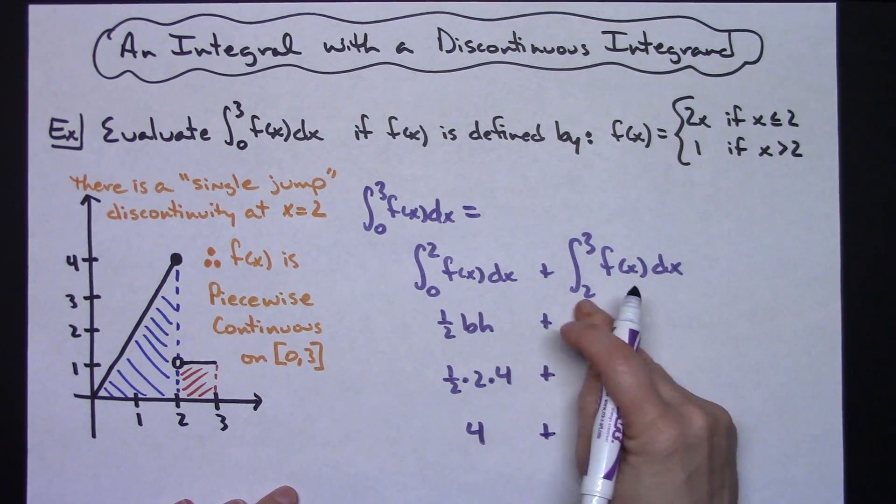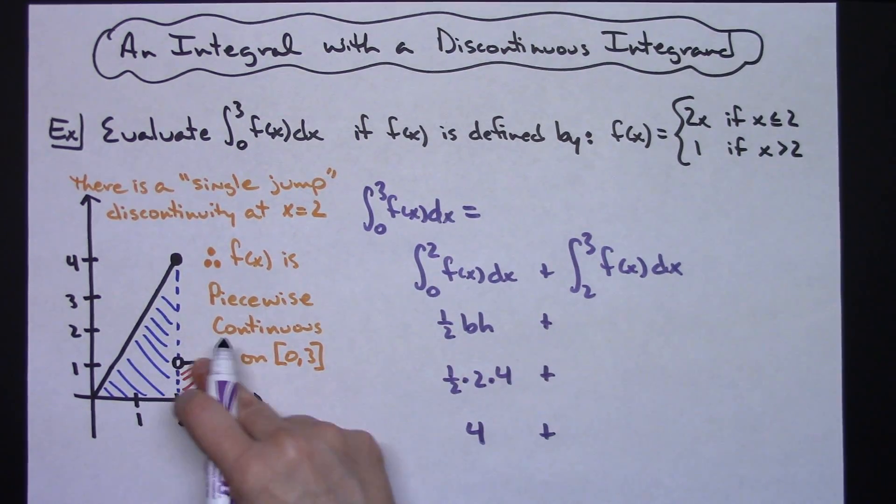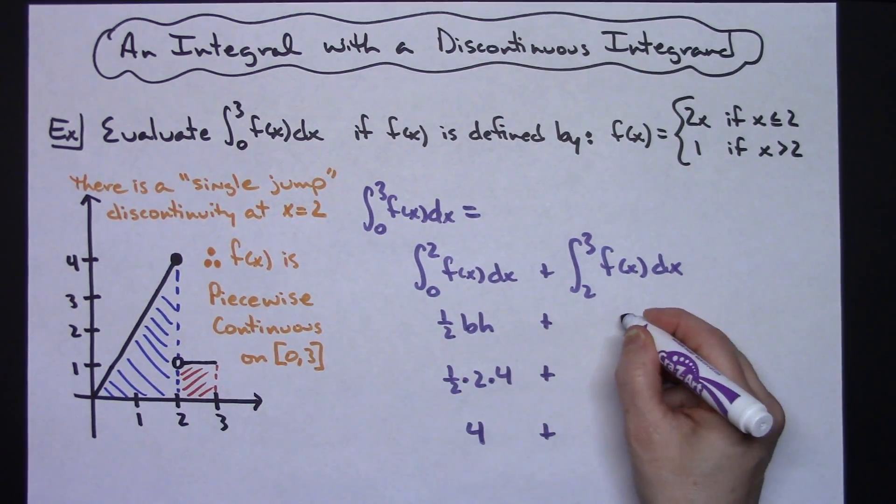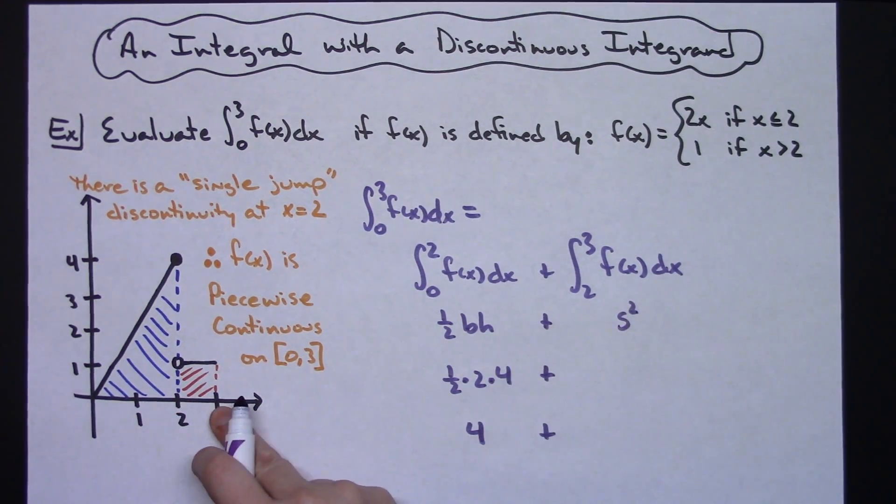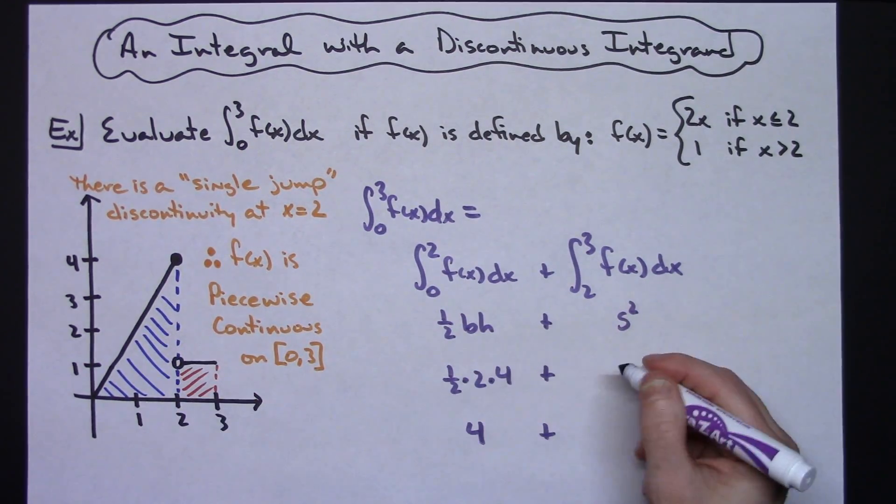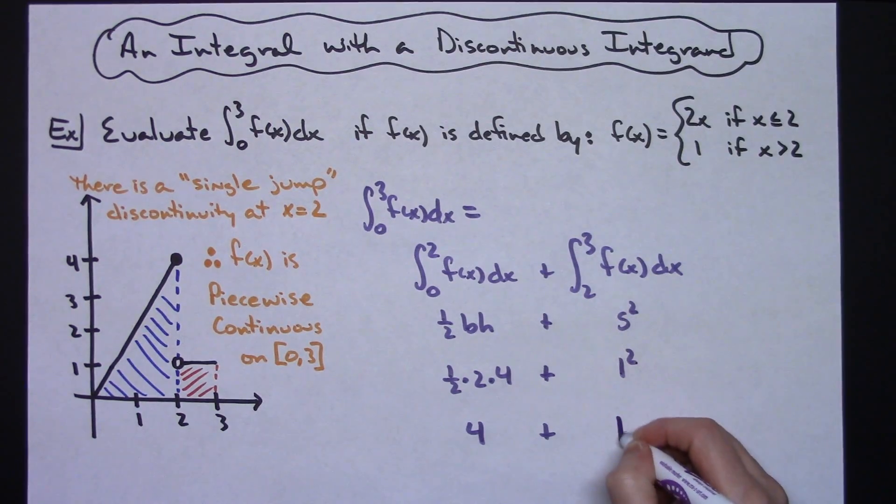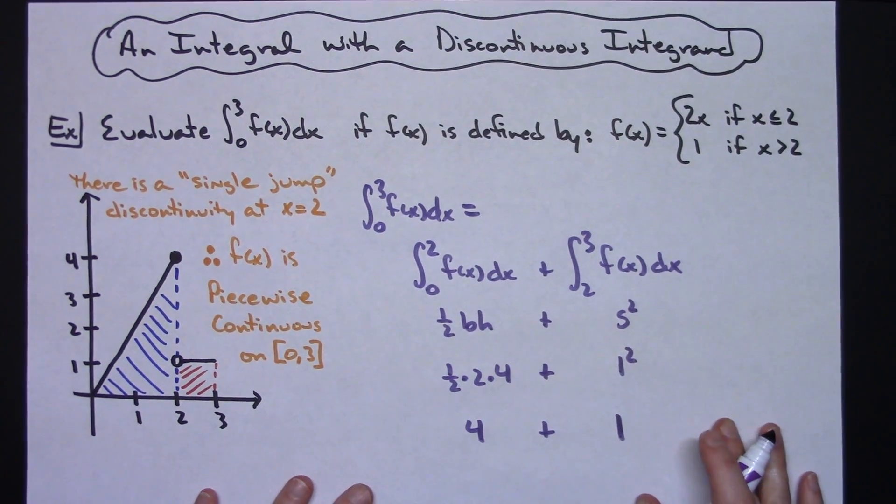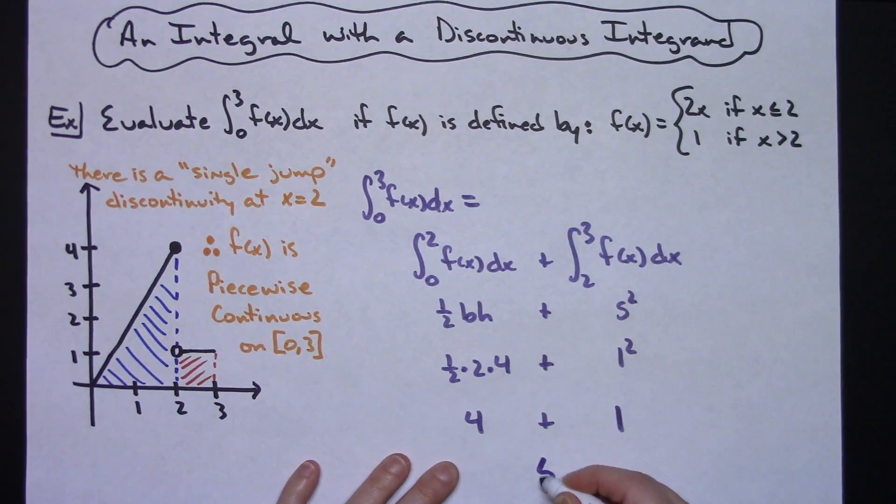Okay, then I'm going to add to that the integral from 2 to 3. I'm going to use the area of a square, so side squared. One side of this is 1, so 1 squared is 1. That's going to give me an overall total integral of 5.